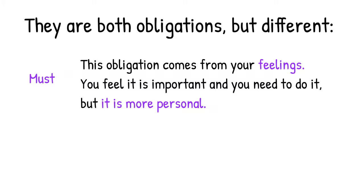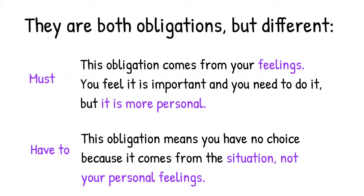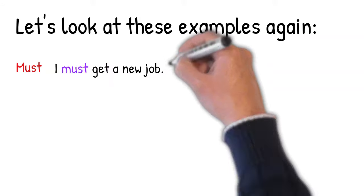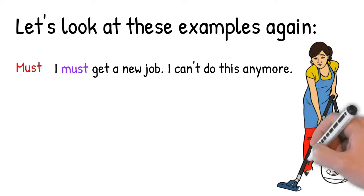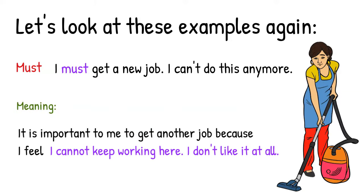Must: this obligation comes from your feelings. You feel it is important and that you need to do it, but it is more personal — it's your personal feelings. Have to: this obligation means you have no choice because it comes from the situation beyond your control, not your personal feelings. So must is personal feelings, and have to comes from the situation. Example: 'I must get a new job, I can't do this anymore.' The meaning is it's important to me because I feel I cannot keep working here — it's my feelings.